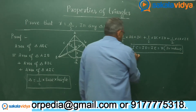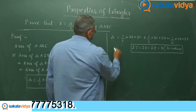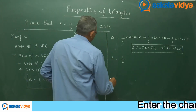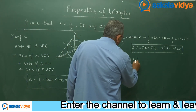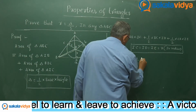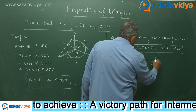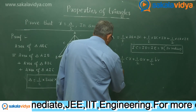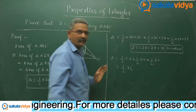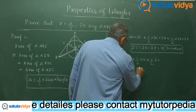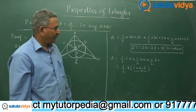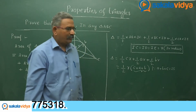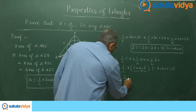So now delta can be written as: half times AB which is small c times r, plus half times BC which is small a times r, plus half times CA which is small b times r. Taking half times small r common, we get delta equals half r times (c plus a plus b). Now, a plus b plus c equals 2s, so delta equals half times r times 2s.